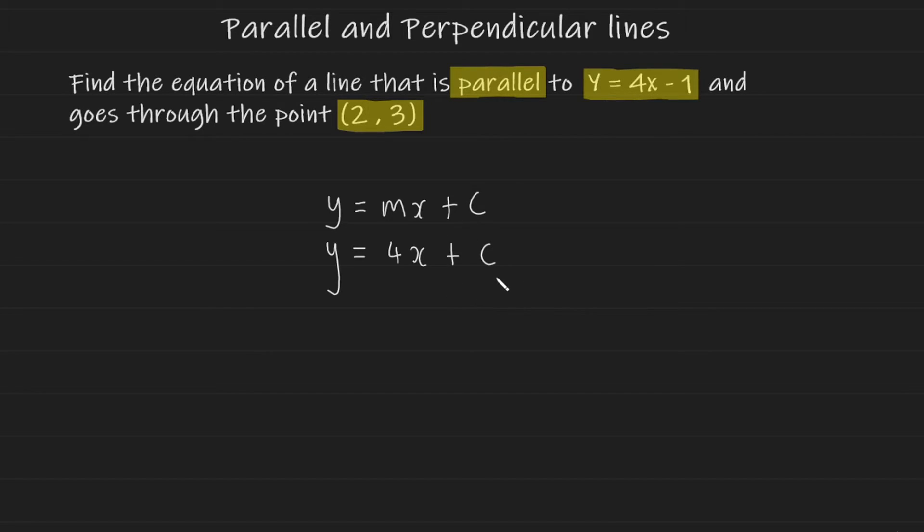We don't know where the line cuts the y-axis, but that's something we can work out using the coordinate that they've given us here, (2, 3). What I'm going to do now is take the x value of this coordinate and the y value of this coordinate, and replace them with the x and y values in my equation here. So I'm going to have 3 equals 4 multiplied by 2 plus c.